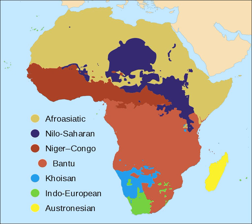Austronesian languages are spoken in Madagascar. Indo-European languages are spoken in South Africa and Namibia — Afrikaans, English, German — and are used as lingua francas in the former colonies of Britain, France and Belgium, former colonies of Portugal and remaining Afro-Portuguese islands, and the current Spanish territories of Ceuta, Melilla and the Canary Islands.